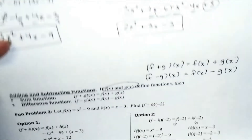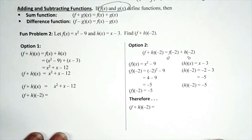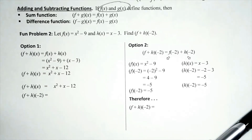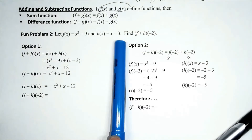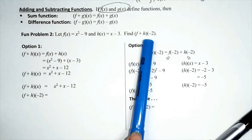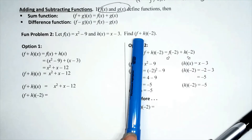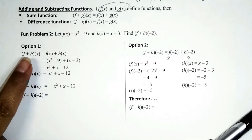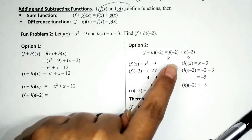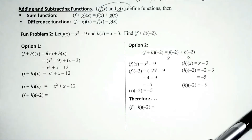Let me guide you with two types of solutions side by side. Problem: let f of x equal x squared minus 9 and h of x equal x minus 3. Find f plus h of negative 2. Not only do we add these functions, we also evaluate the sum at negative 2. Option one: add the functions now and evaluate later. Option two: evaluate now and add later.